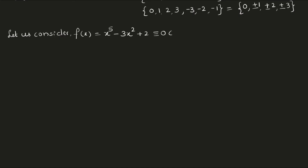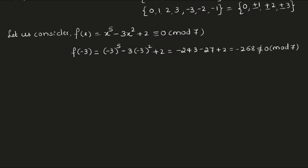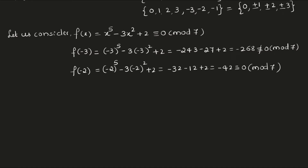Consider the function f(x) = x⁵ - 3x² + 2 ≡ 0 (mod 7). Now put minus 3 in the function. When you put minus 3, you will get minus 243 minus 27 plus 2, that is minus 268, which is not congruent to 0 mod 7. When you put minus 2 and simplify, you will get minus 42. Minus 42 is congruent to 0 mod 7 because 42 is divisible by 7.